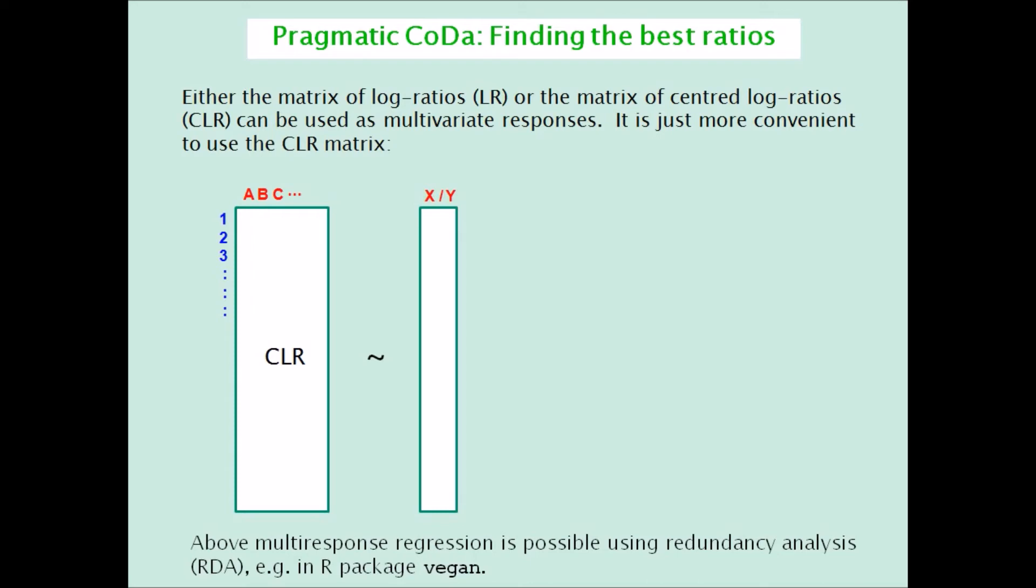This question can be answered using redundancy analysis, a method with an appropriate name, which is available in the R package vegan. So every one of the half m times m-1 log ratios is considered, and the one that explains the most log ratio variance is selected.